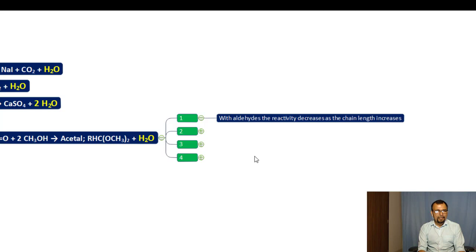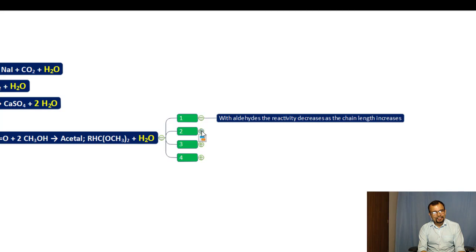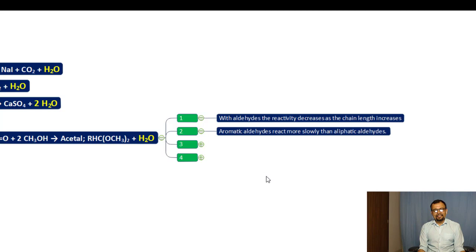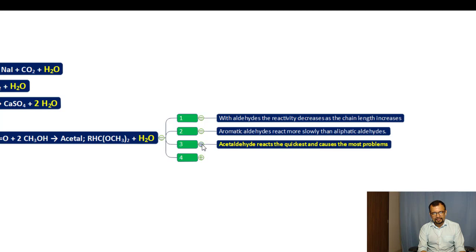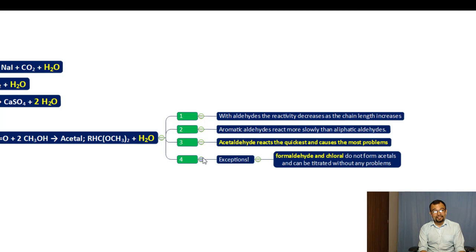With aldehydes, reactivity decreases as the chain length increases. The smaller the carbon chain, the greater the probability of acetal formation and water release. Aromatic aldehydes react more slowly than aliphatic aldehydes. Acetaldehyde reacts the quickest and causes the most problems, being the smallest possible carbon chain — it reacts very quickly and creates water molecules. Hence, the KF reagent is not a suitable technique to estimate water content in acetaldehyde.